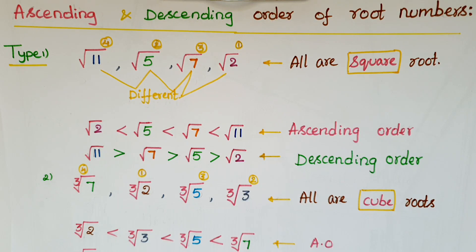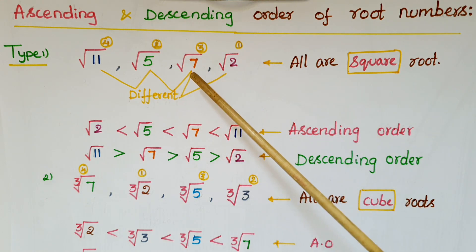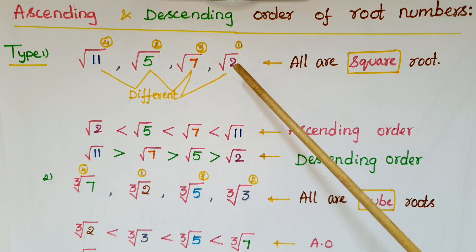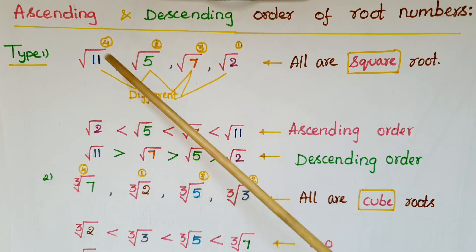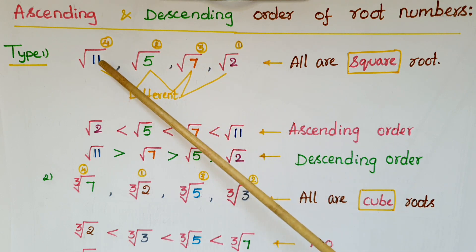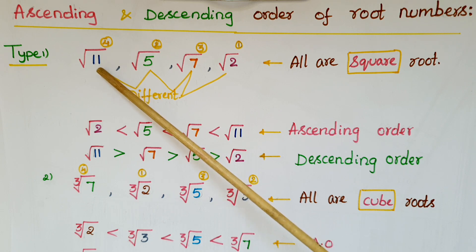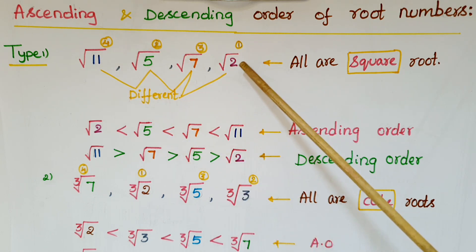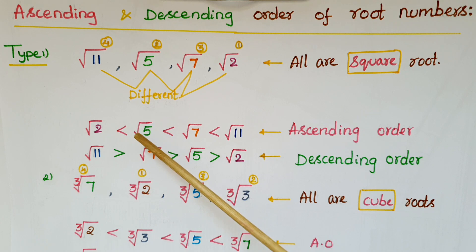Hello everyone, today I am going to show how to write ascending and descending order of root numbers. The first example is: square root of 11, square root of 5, square root of 7, and square root of 2. All are square roots, so find which is the largest number — that is 11 — and the smallest is 2. So ascending order is: square root of 2, then square root of 5.